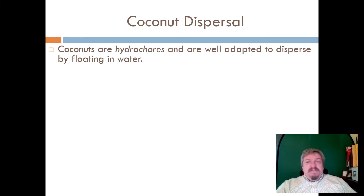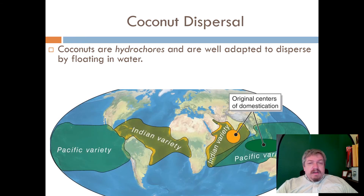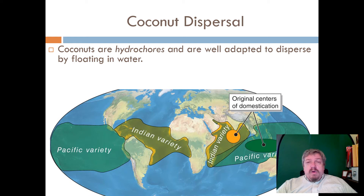Inside the coconut shell is the white coconut meat, which is food for the seed, and a little bit of water. It can float from island to island, and when it washes up on the beach of another island hundreds of miles away, it can start growing — that's how palm trees naturally spread. Before humans domesticated them, there was a variety that grew in the Indian Ocean and one in the Pacific — those were their natural ranges.